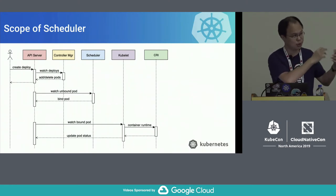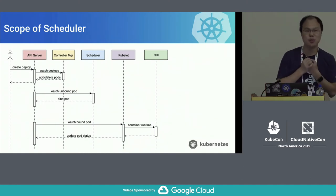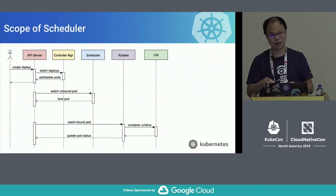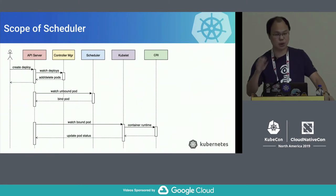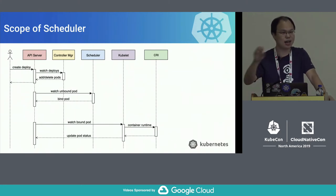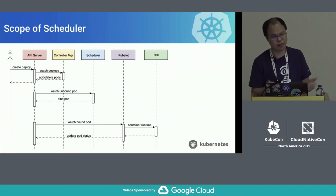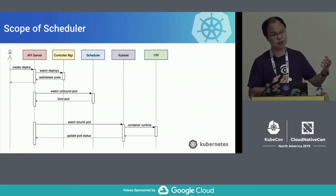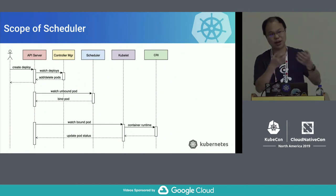The scheduler watches the pods as well as many other related resources, because it needs to know the overall view of the whole cluster to make a good decision about which node to place the pod on. It watches pods that don't have the node name set, then does some internal magic — which I'll go into detail on — across the cluster to check which node is the best fit for the incoming pod.